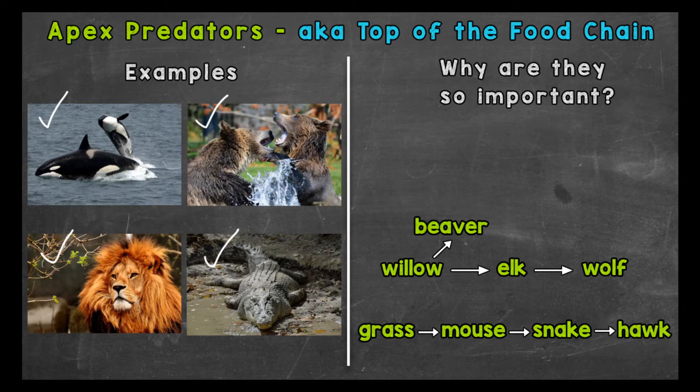Let's get into their importance to ecosystems, and we'll start with their importance to balance. Without apex predators, ecosystems can quickly become unstable and get out of balance.